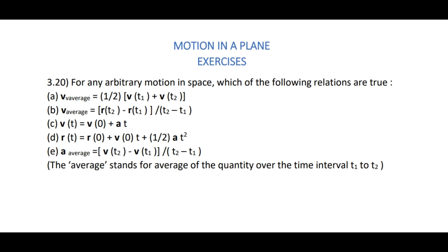The options are: A) V_average = half of V(T1) + V(T2); B) V_average = [R(T2) − R(T1)] / (T2 − T1); C) V(T) = V(0) + At; D) R(T) = R(0) + V(0)·T + half·A·T²; and E) A_average = [V(T2) − V(T1)] / (T2 − T1).